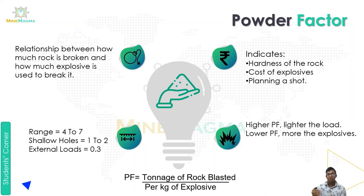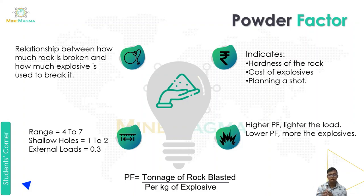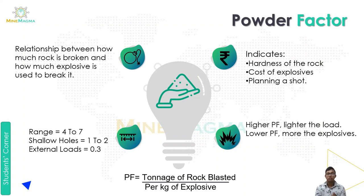A higher powder factor means lighter the load — our explosive is less relative to the rock broken. A lower powder factor means heavier the load — more explosive is being used. So higher powder factor equals lighter load, lower powder factor equals heavier load. The formula is: Powder Factor (PF) = Tonnage of rock blasted per kg of explosive used.